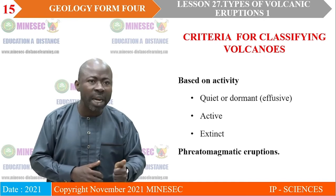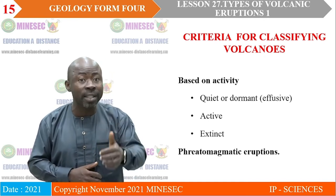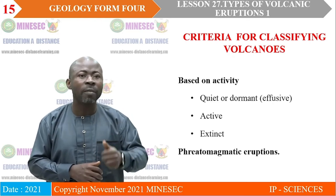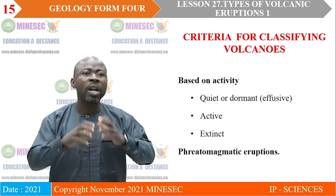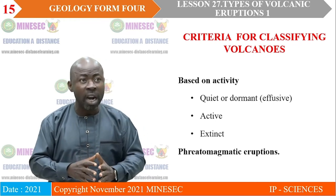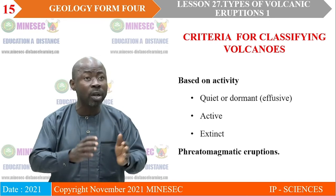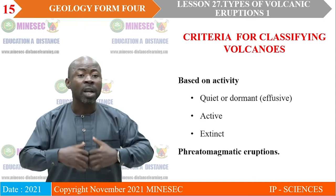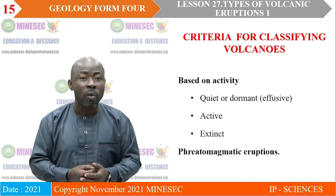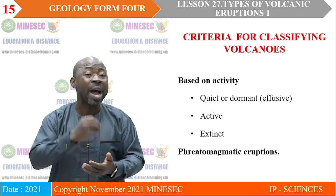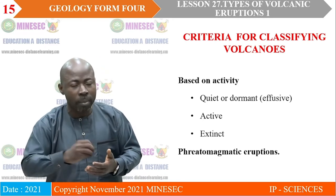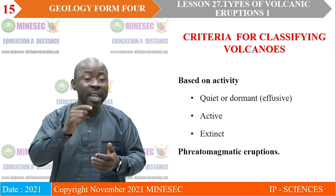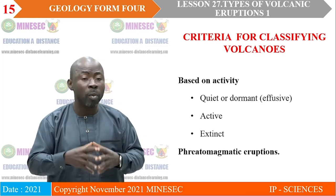Based on the activity of the volcano, three classical groups of volcanoes are identified. One, we have quiet, dormant, or effusive volcanoes. Two, we have active volcanoes. Three, we have extinct volcanoes. The quiet volcanoes are volcanoes that erupt and after a certain period of time go into inactivity, creating a situation where we see no activity. That particular volcano may never erupt again, which is very challenging for the local population, because the year it erupts again many people will be taken by surprise.